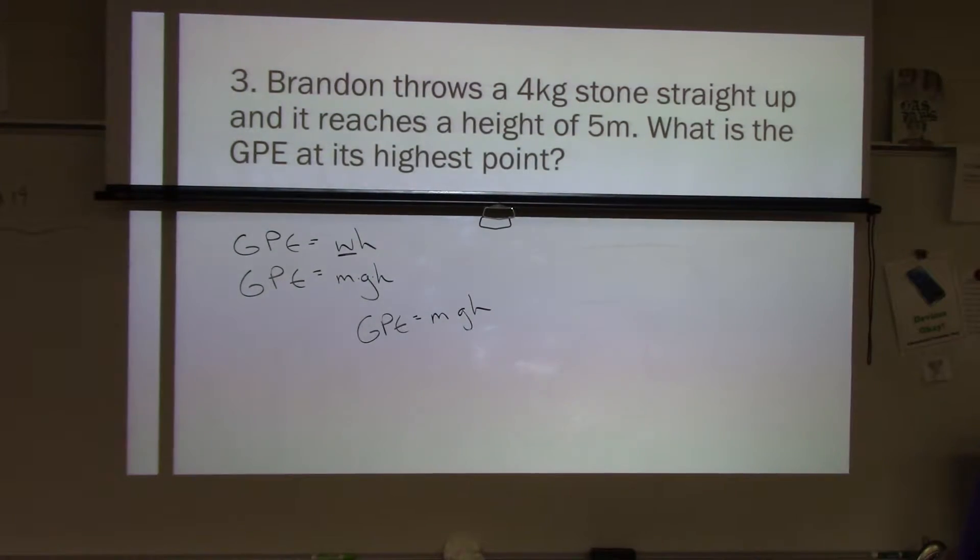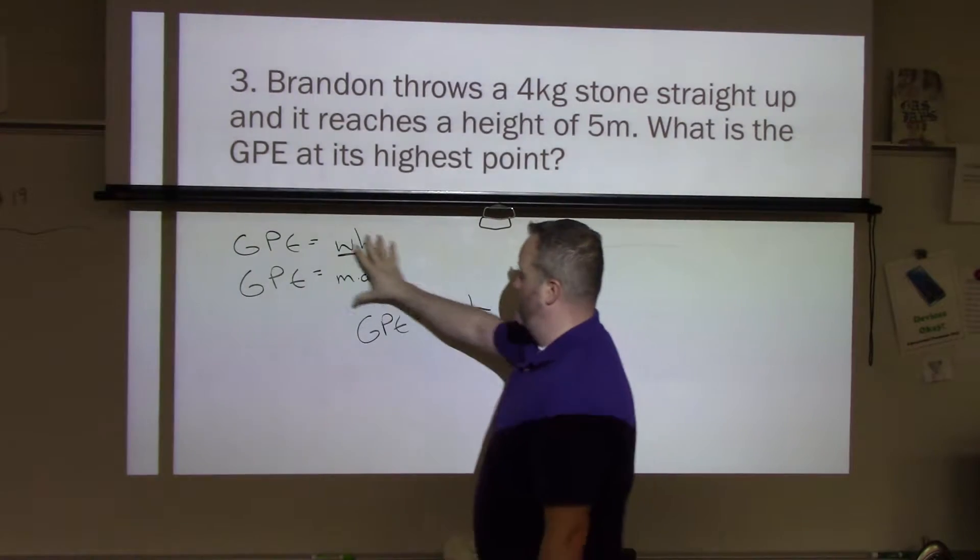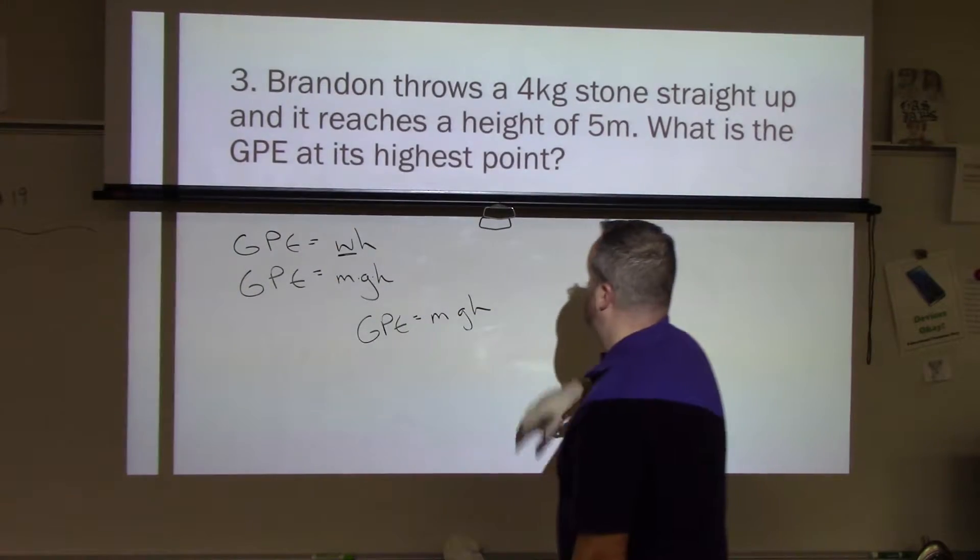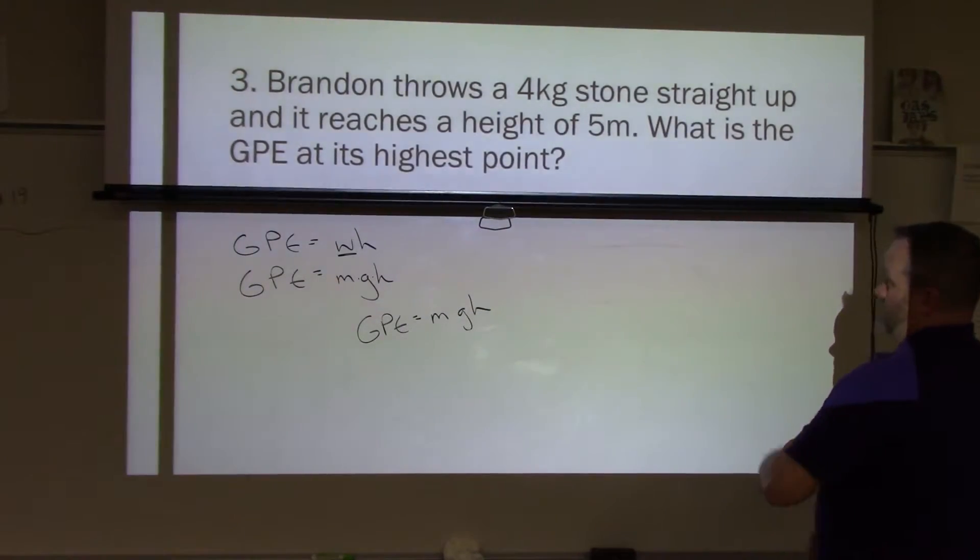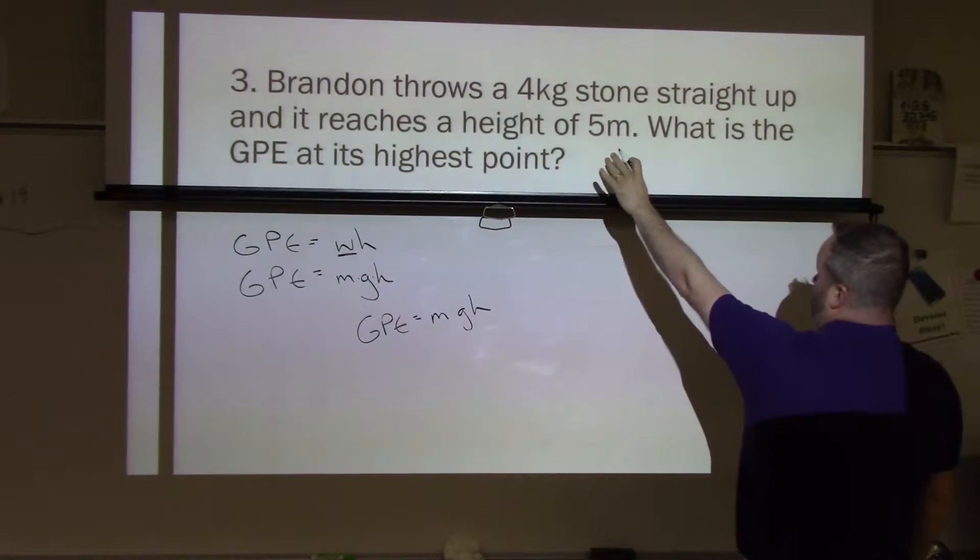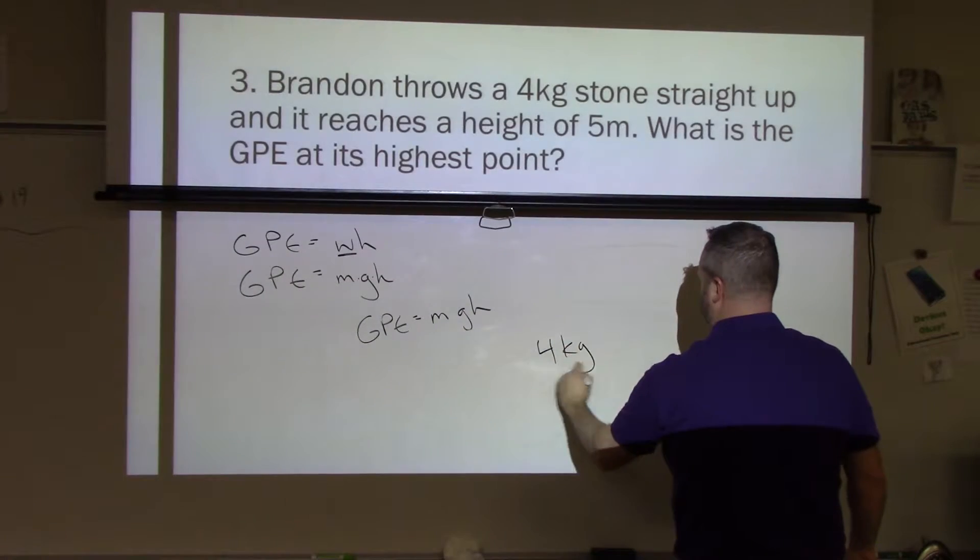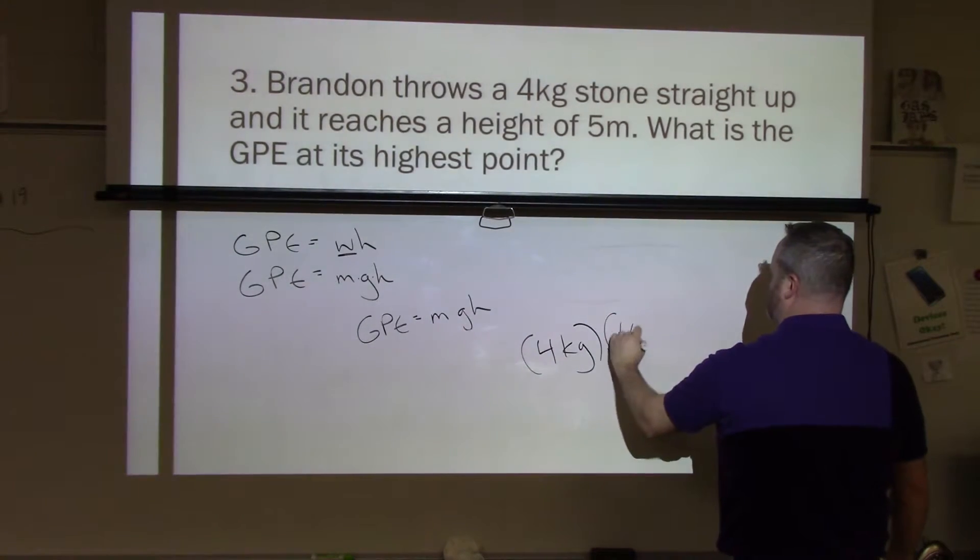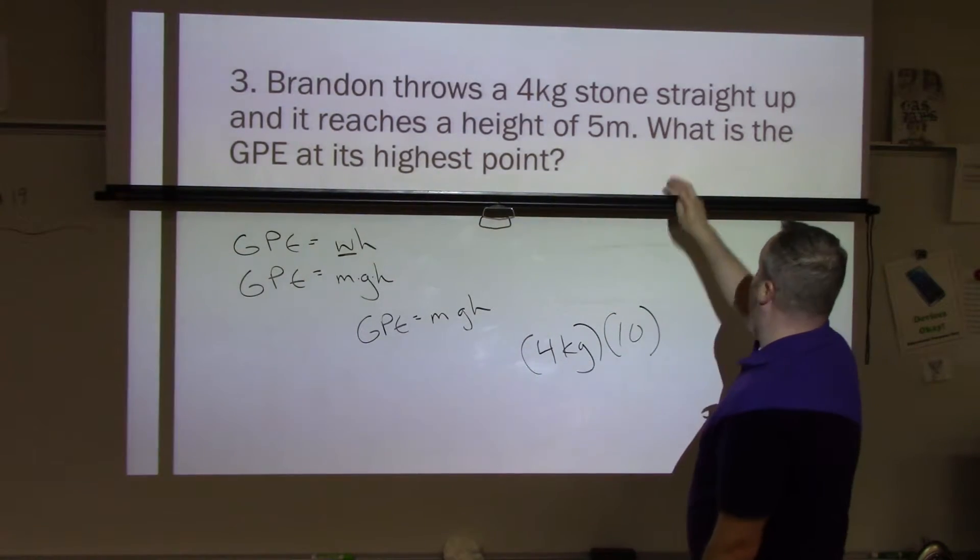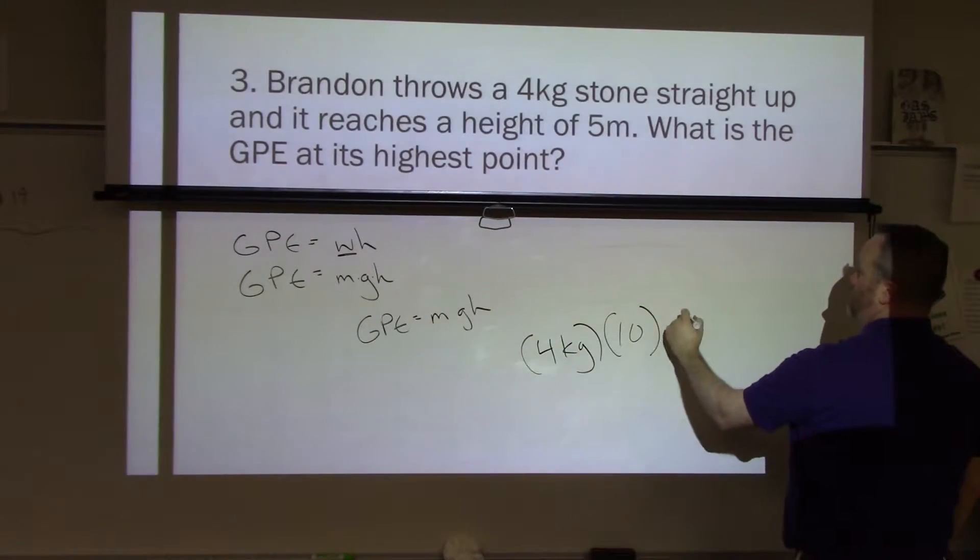Now, this is another one that's going to be using GPE. So I'm going to leave the formula right here. GPE is what it's asking for. So, Brandon throws a four kilogram stone. So the mass is going to be four kilograms. For gravity, I'm going to use 10. And then, for height, I'm going to use five meters.